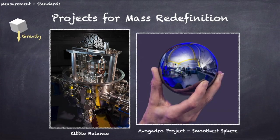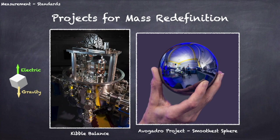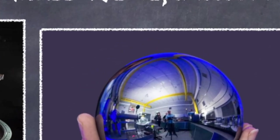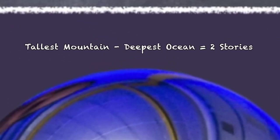A Kibble balance basically uses electric force to counterbalance gravitational force on an object to measure its weight very precisely. On the other hand, Avogadro project involves counting the number of atoms in the world's roundest objects. How smooth exactly are these spheres they used in the project? Well, if you blow up one of these spheres to the size of the earth, the distance between the tallest mountain and the deepest ocean would only be about 2 stories high. Suffice it to say, even a baby's butt can't be that smooth.